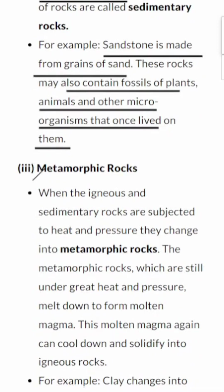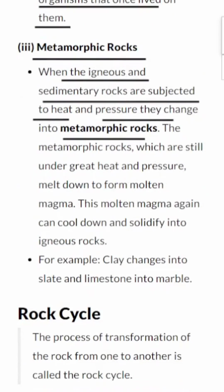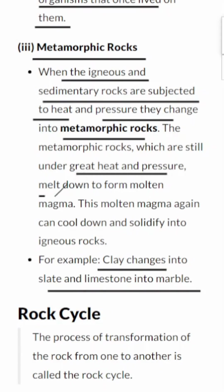Metamorphic rocks are like the Earth's shapeshifters. When igneous or sedimentary rocks find themselves in a hot spot under tremendous pressure, they undergo a transformation into metamorphic rocks — it's like they're getting a makeover. For example, clay can change into slate, and limestone can become marble. And if the heat and pressure get too intense, these rocks can even melt down and become molten magma, eventually solidifying into igneous rocks again. It's a never-ending cycle of change beneath our feet.